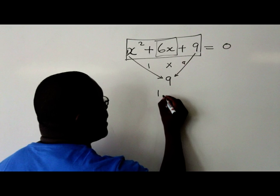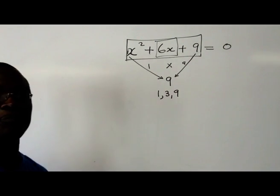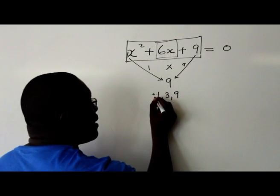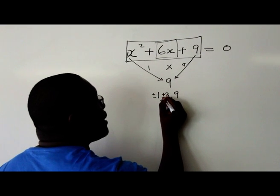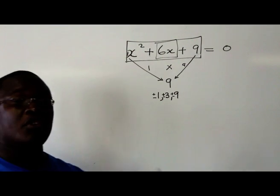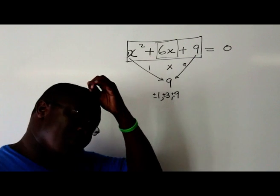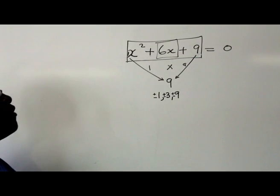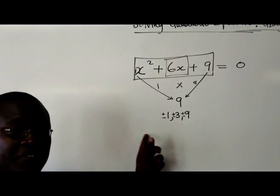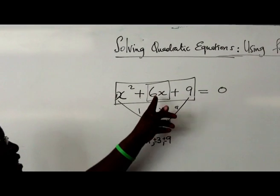If I write down the factors of 9, they are 1, 3, and 9. So it's positive 1, negative 1, positive 3, negative 3, positive 9, negative 9 — both positives and negatives are actually factors of 9. It's important to remember that. Now you ask yourself: of these factors of 9, which two can you add together to give you 6?